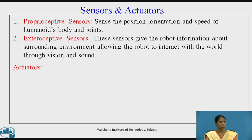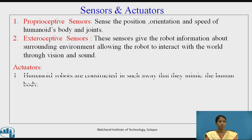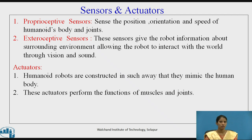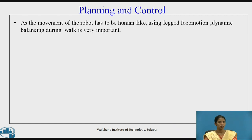Next, actuators. Humanoid robots are constructed in such a way that they mimic human activities or the motion the human body does. These actuators perform the functions of muscles and joints. As the movement of the robot has to be human-like, using leg locomotion, dynamic balancing during walking is very important. The humanoid robot should balance itself while it performs the activity of walking.